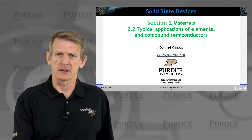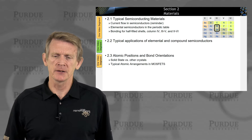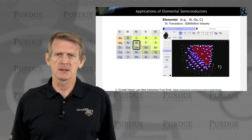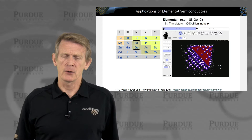Hello, welcome back. Now we'll be talking about applications of semiconductors, which is in the sequence of section 2 of materials. Let's dive into the periodic table again, columns 2 through 6, and look at the elemental semiconductors.